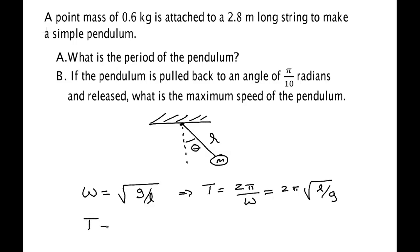Putting in the values that we were given, we have 2π square root 2.8 meters over 9.8 meters per second squared. Meters cancel, second squared comes up, square root of second squared is the second.